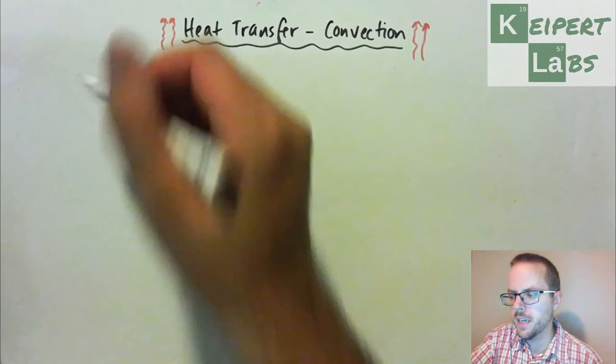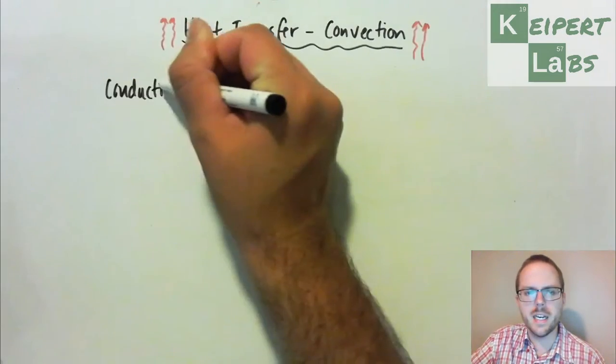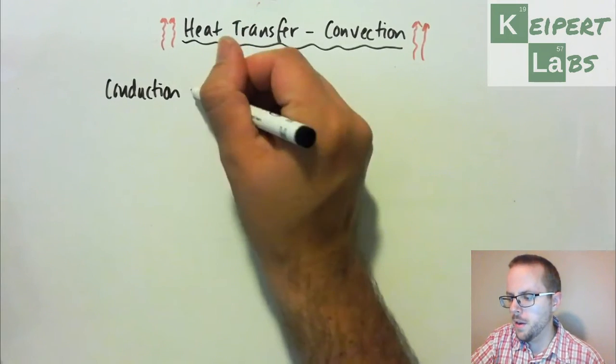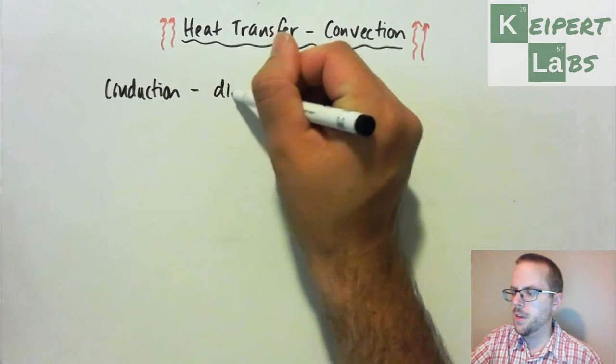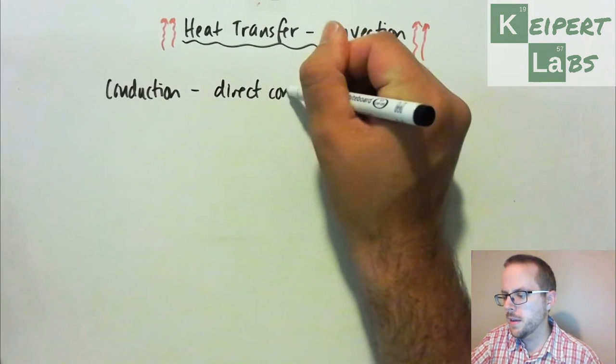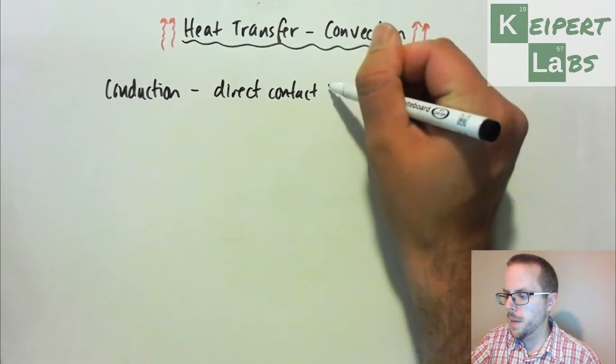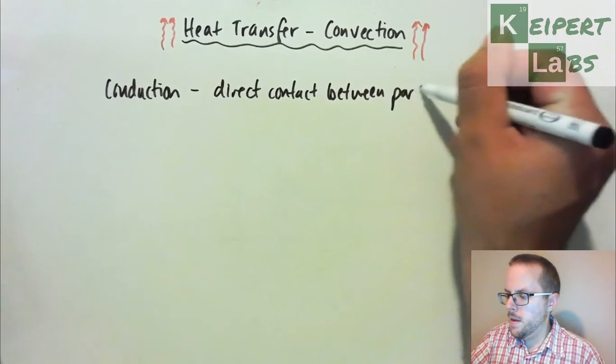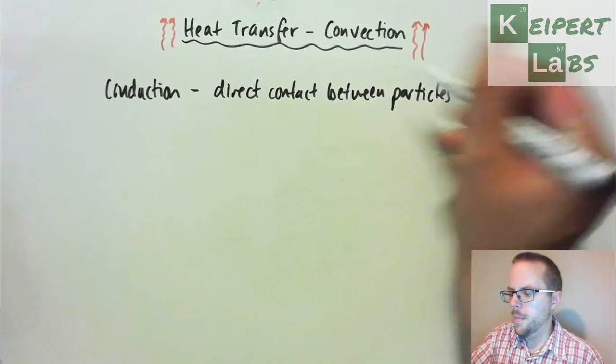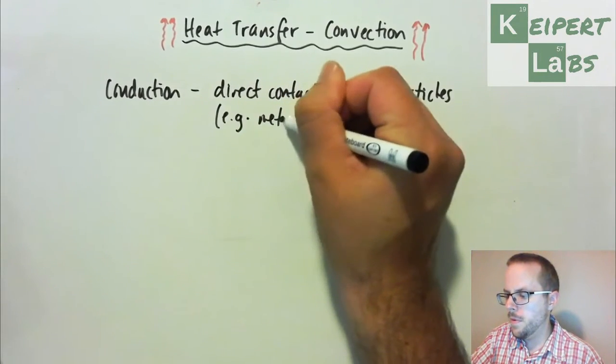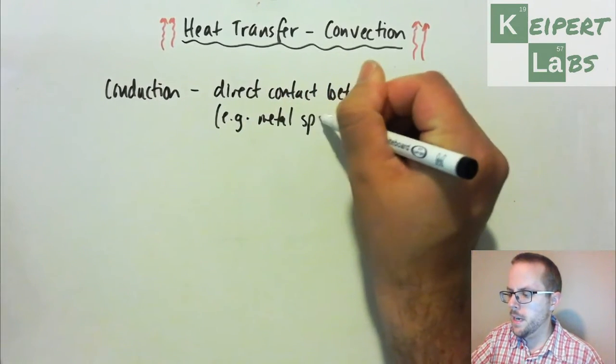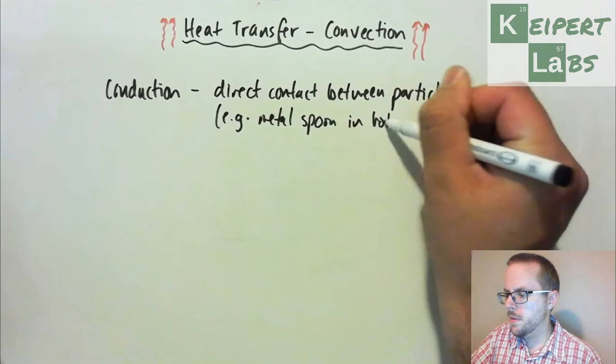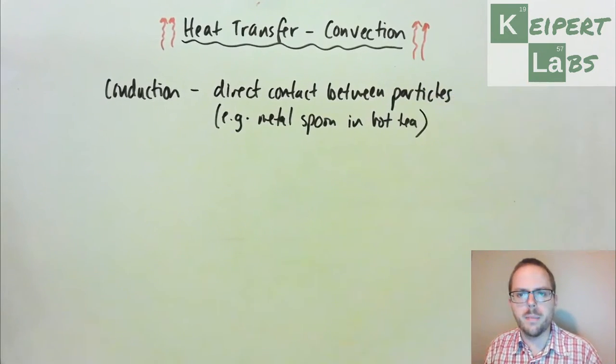In our first video we looked at the technique of heat transfer by conduction, so we're thinking about transferring thermal energy by direct contact between particles. For example, a metal spoon in hot tea is one kind of example of this.